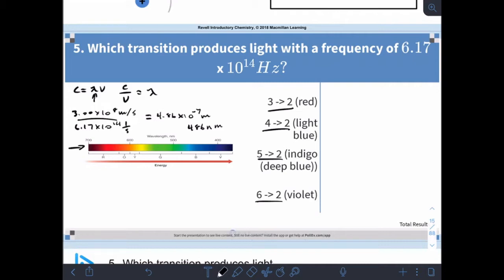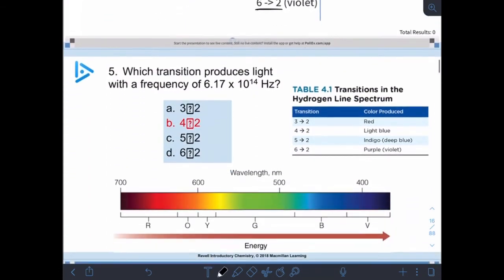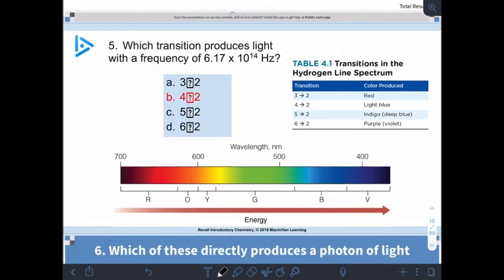On our visible spectrum here, 486 is sitting right about there. Our transition from 4 to 2 gives us that frequency of the light blue light. That's the one that we're after, this one right here. Energy, wavelength, frequency, energy level transitions - they're all related.